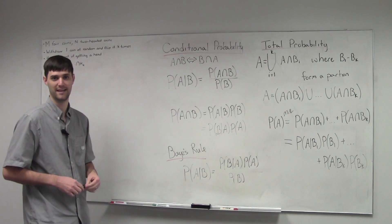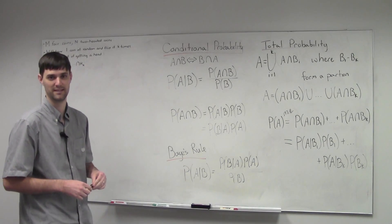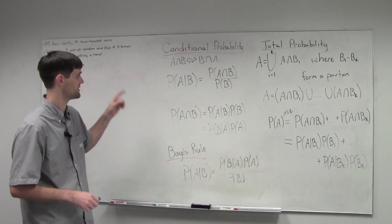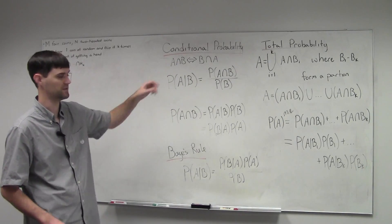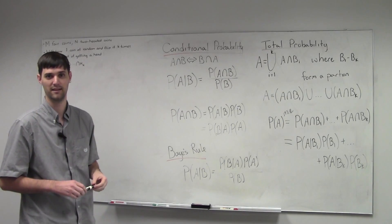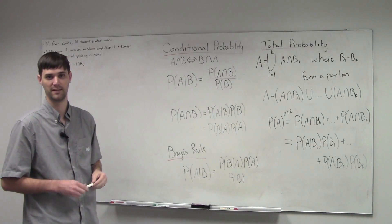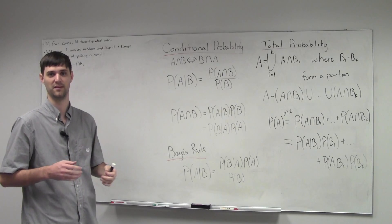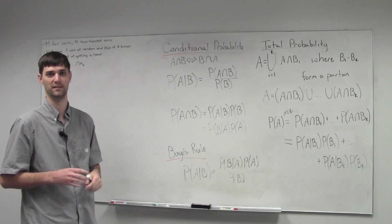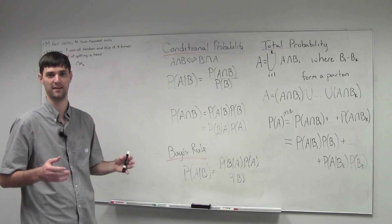In order to attack that problem, we're going to discuss these fundamentals: conditional probability, Bayes' rule, and total probability. We'll show you how they're derived, and we're going to assume that you have a certain level of set theory knowledge.